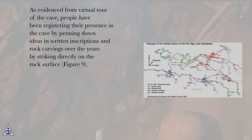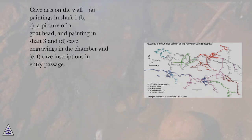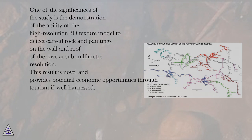As evidenced from the virtual tour of the cave, people have been registering their presence by pinning down ideas in written inscriptions and rock carvings over the years by striking directly on the rock surface (figure 9). Cave arts on the wall include: a) paintings in shaft 1, b) and c) a picture of a goat head and painting in shaft 3, d) cave engravings in the chamber, and e) and f) cave inscriptions in the entry passage. One of the significances of the study is the demonstration of the ability of the high-resolution 3D texture model to detect carved rock and paintings on the wall and roof of the cave at sub-millimeter resolution.